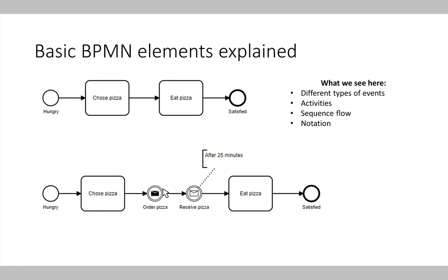Using the small icons inside the events, we can further annotate what the event is about. For example, the black letter symbol represents information being sent and the white letter symbol represents information being received. We can also annotate different shapes with additional information — for example, we expect the pizza to be received after 25 minutes.